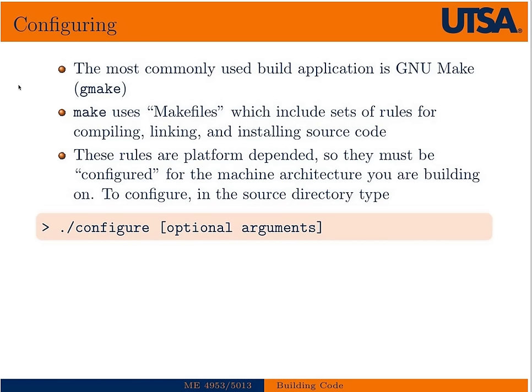By far the most commonly used build application is the GNU make system, which is installed on all Unix machines as a command called make, or gmake should also run it. Make uses makefiles, which are text input to the make program. What makefiles do is include a set of instructions used for compiling, linking, and installing the source code.